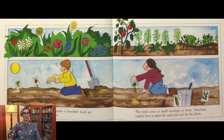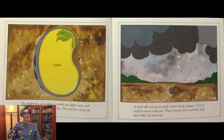A flower bed or vegetable garden is beautiful. Seeds are planted to grow in the gardens, just like we have in our garden. The seeds come in small envelopes or boxes, and directions explain how to plant the seeds and care for the plants. The beginning of a plant is curled up inside each seed, and food is stored inside the seed too. The seed has a seed coat on the outside to protect it.